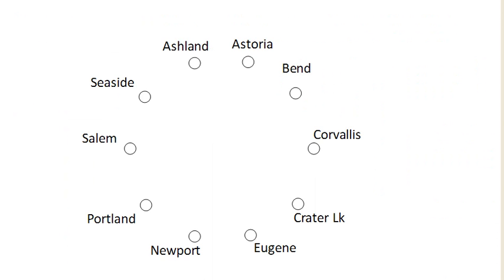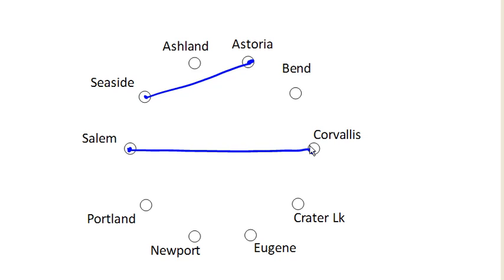Seaside to Astoria has a cost of 17. I have the list of costs written down here, so I'm not going to jump back and forth. The next cheapest was Corvallis to Salem, so we'll go ahead and add that.